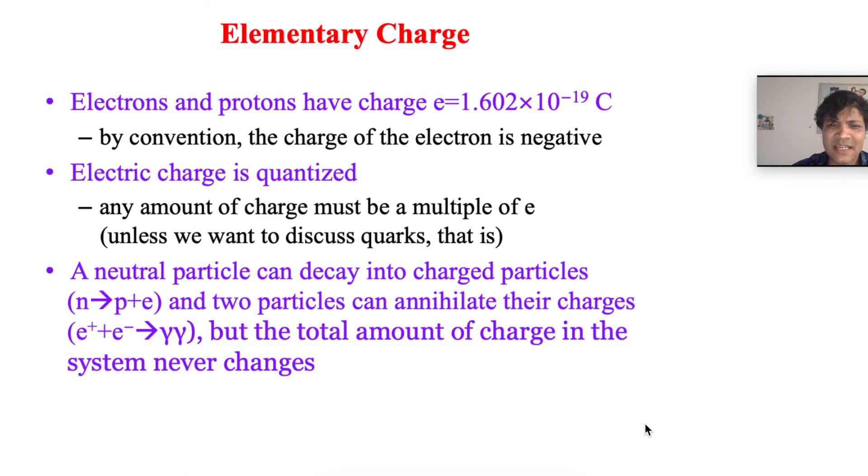Electric charge is quantized - any amount of charge must be a multiple of e. A neutral particle can decay into charged particles, and two particles can annihilate their charges, but the total amount of charge in the system never changes.